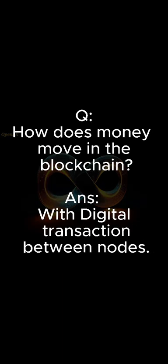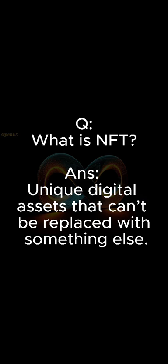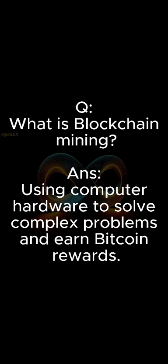How does money move in the blockchain? The answer is with digital transfer transactions between nodes. What is a smart contract? The answer is an automated agreement written in code. What is NFT? The answer is unique digital assets that can't be replaced with something else. What is blockchain mining? The answer is using computer hardware to solve complex problems and earn Bitcoin rewards.